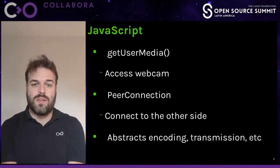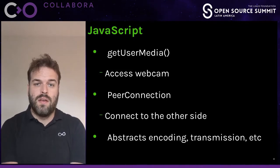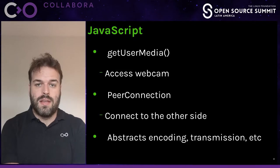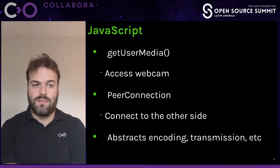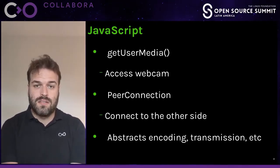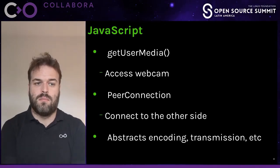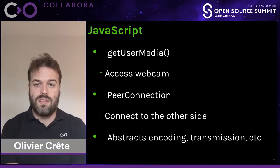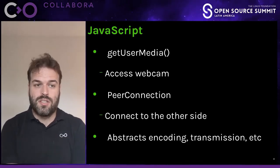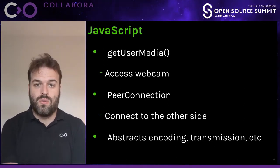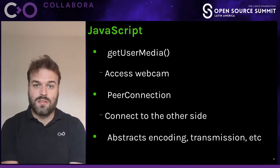The JavaScript API in the browser is composed of really two main parts. First, there's the getUserMedia function, which allows the JavaScript application in the browser to access the microphone and the camera in a secure way, meaning that the user has to approve it. This is completely offline — it doesn't actually connect to the internet, it just accesses the data and you can put it on the screen, for example. In addition to this API, there is the peer connection API, which is the actual API to connect to the other side, to establish the peer connection.